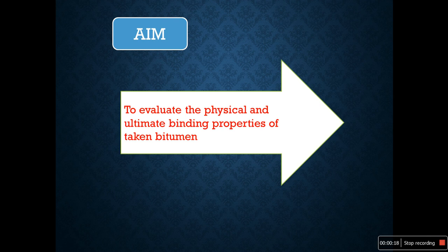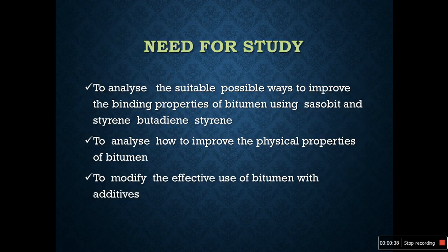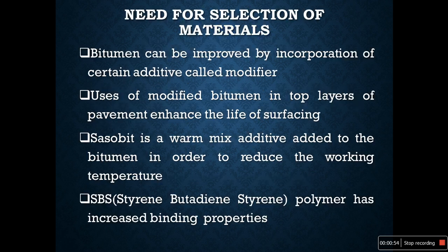The aim of this project is to evaluate the physical and ultimate binding properties of bitumen. Its objective is to test the physical properties of bitumen when additives like Sasobit wax and SBS are added, to determine the binding property of bitumen mixed with additives, and to check the microstructure analysis of the modified bitumen for homogeneity. The need for this study is to analyze suitable ways to improve the binding properties of bitumen using Sasobit and styrene butadiene styrene, and to modify the effective use of bitumen with additives.